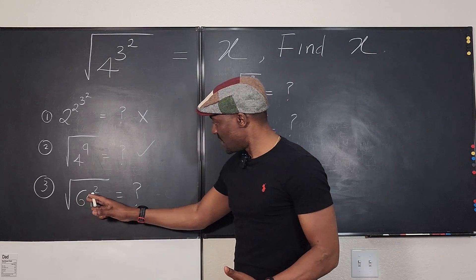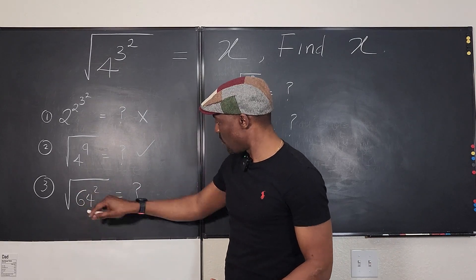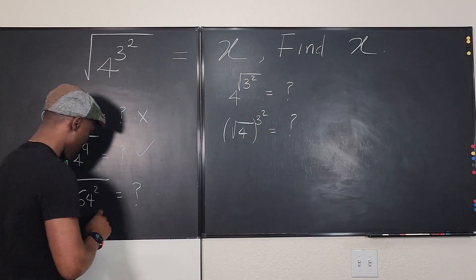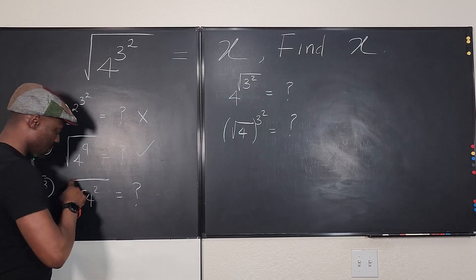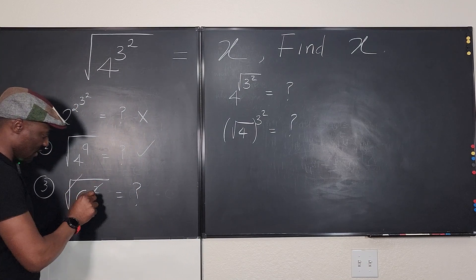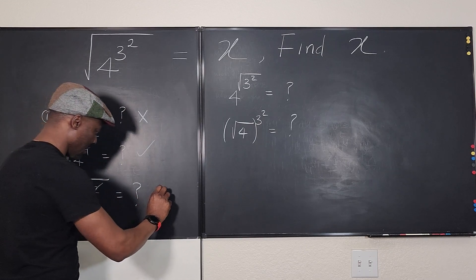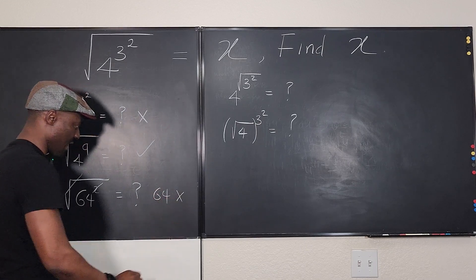For this one, the square root of 64, well, this should give us 64. Okay, so the answer to this expression will be 64, because this will cancel this out, and we're going to get 64. This is not correct.